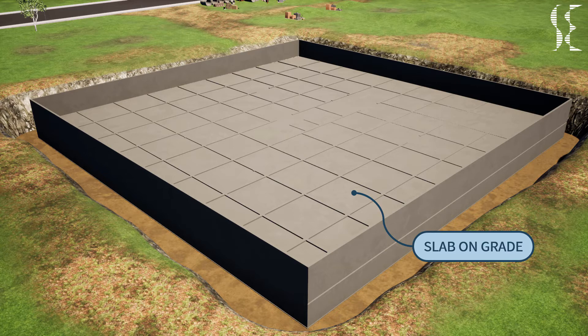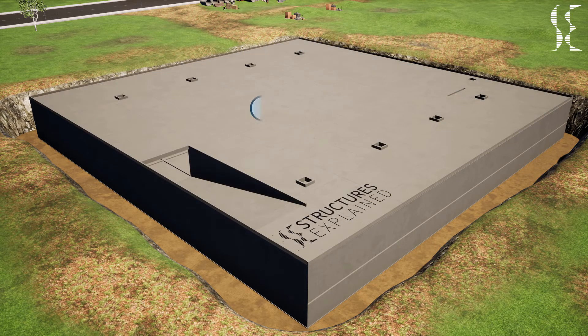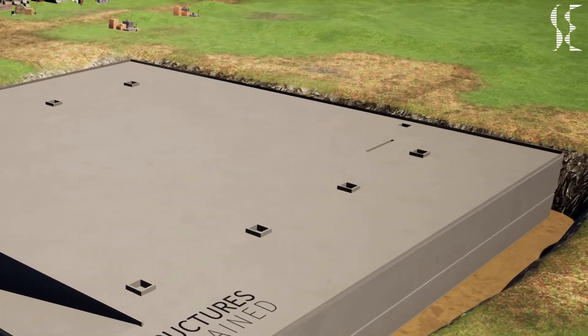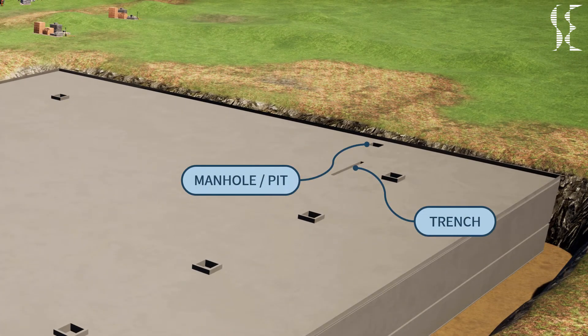Next we look at the podium. The podium is generally required for landscaping, internal vehicular movements like cars, bikes, and even fire trucks in case of a fire. It may also house ducts for ventilation to the basement. Next we talk about pits, manholes, and trenches for drainage purposes. These components may be cast in concrete, brickwork, or may come as precast units as per requirement, and also require PCC at the bottom and proper waterproofing.